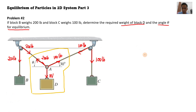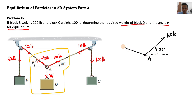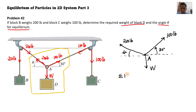Let's draw the free body diagram. So we have 100 pounds directed at an angle of 30 degrees, and we have 200 pounds. The angle for that is unknown, so let's put that as theta. We also have its weight. For equilibrium, the summation of forces along the x-axis is zero, assuming all forces going to the right are positive.